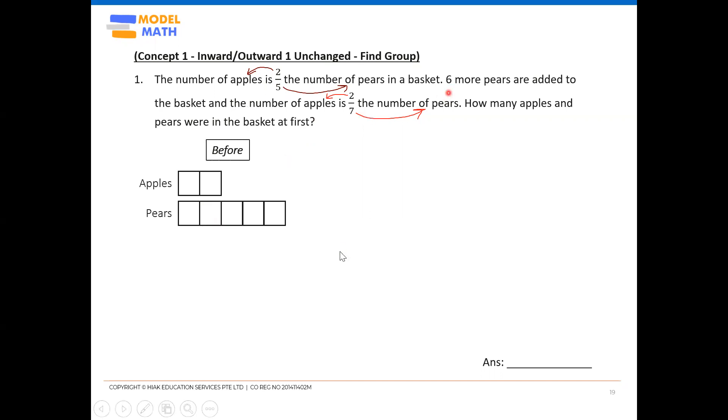I have a change. Draw an arrow and for pears, you know that six pears are added.